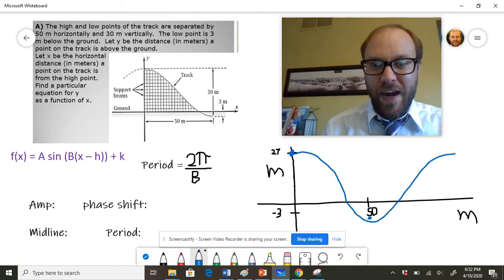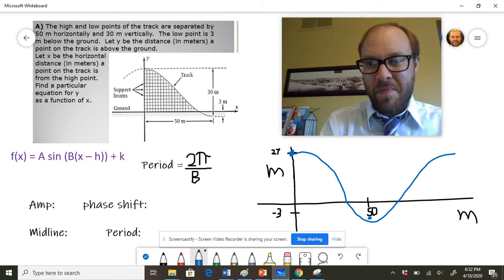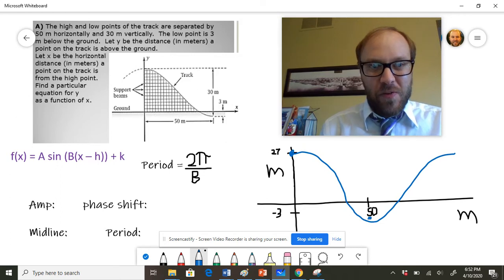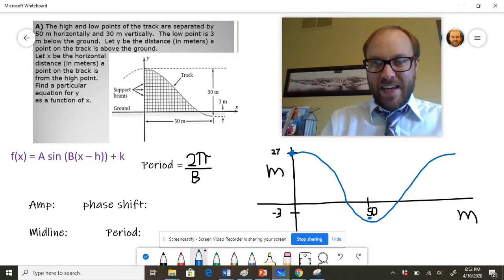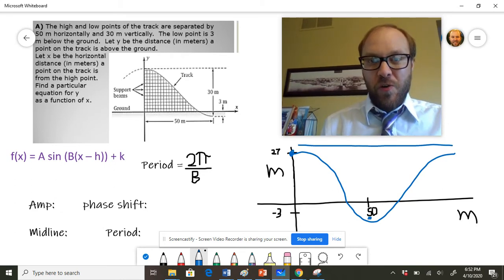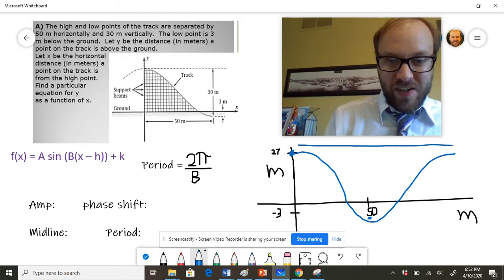And you have to be real careful when you're working with the period of these functions because notice this one starts us out at a maximum and has us go to a minimum point. And that's not the full cycle. Notice that it's actually maximum to maximum - that's the full cycle. So on the surface, you're thinking the period is going to be 50. The period here is actually going to be 100.